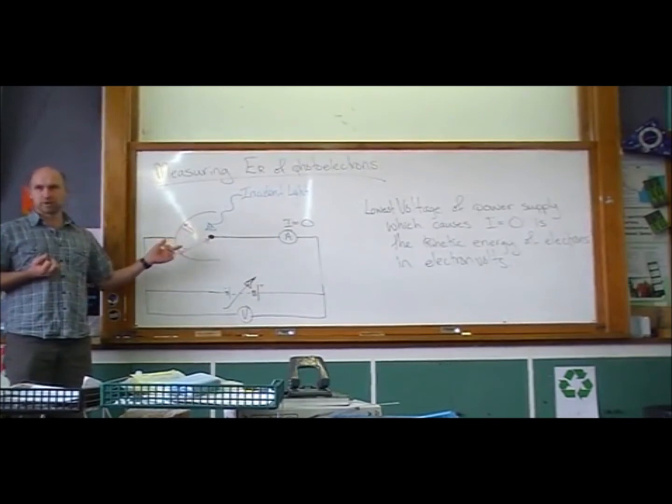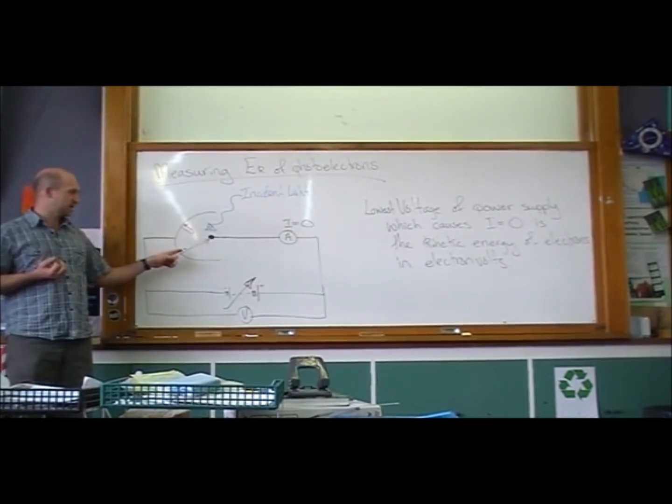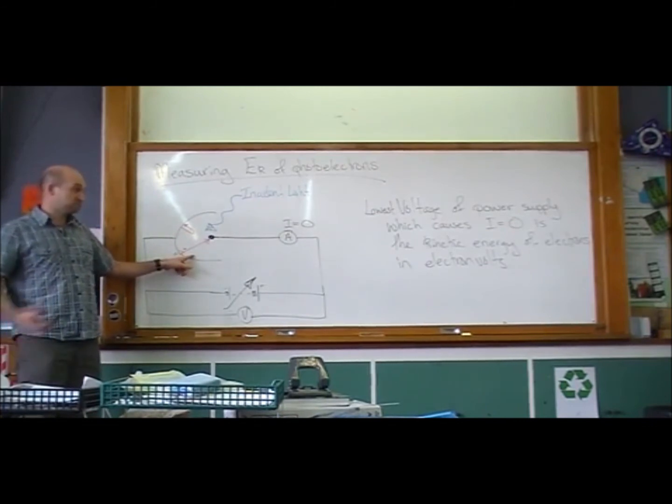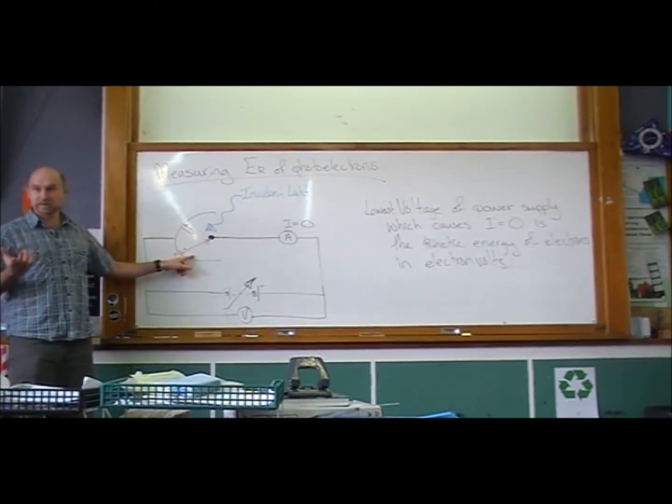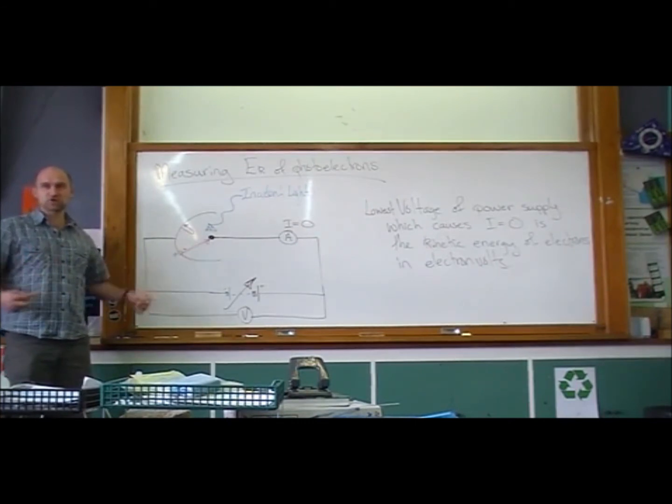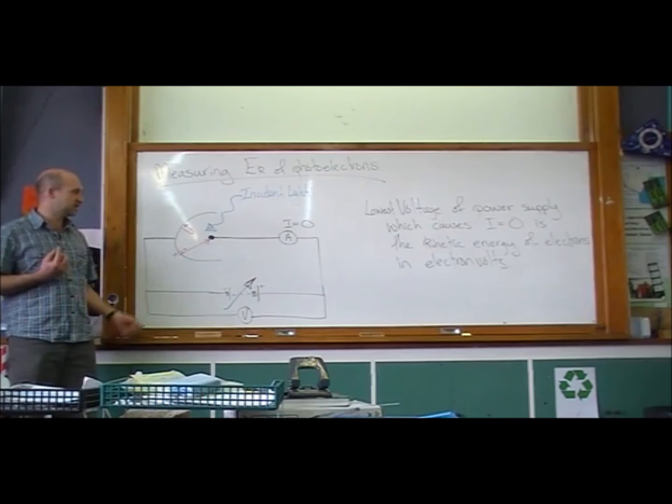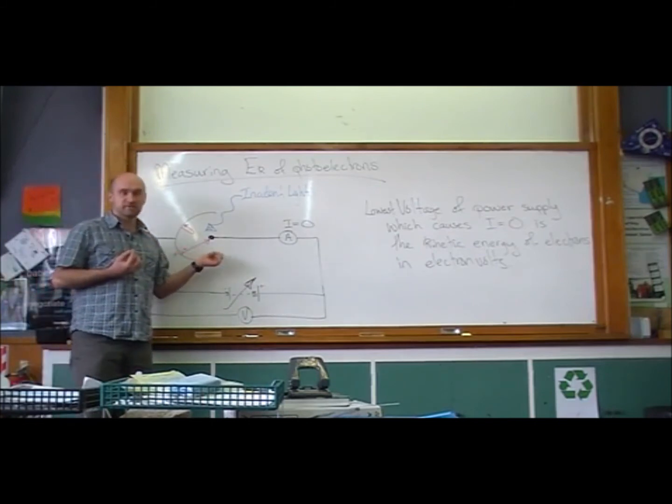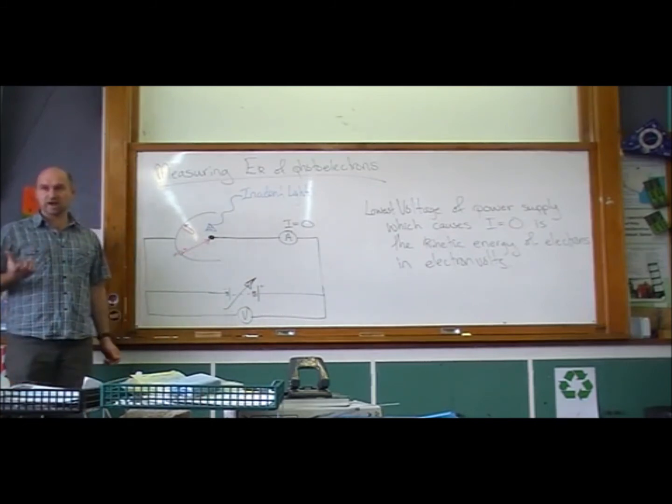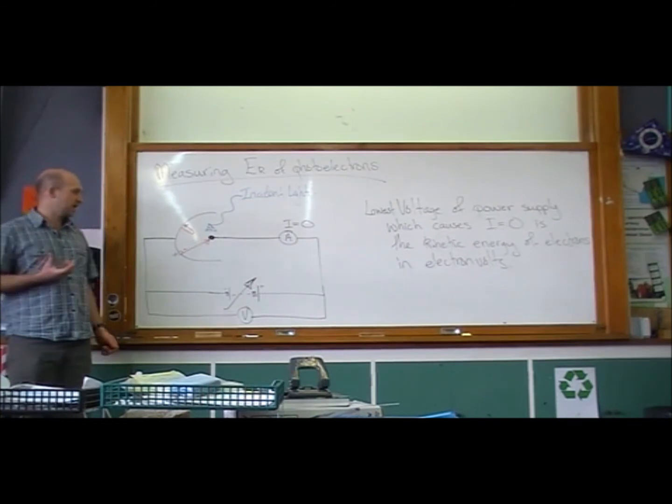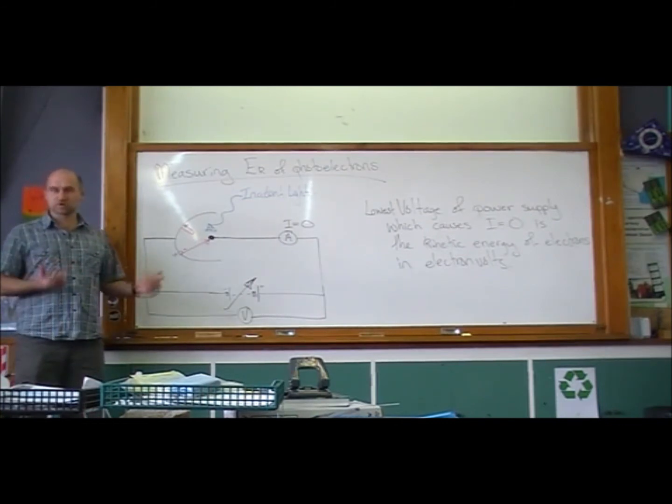Like if we fire blue light at the emitter plate, we get some photoelectrons and we measure their kinetic energy. But then if we turn up the frequency of the light, if we shine violet light instead, we find that the photoelectrons have got higher kinetic energy.